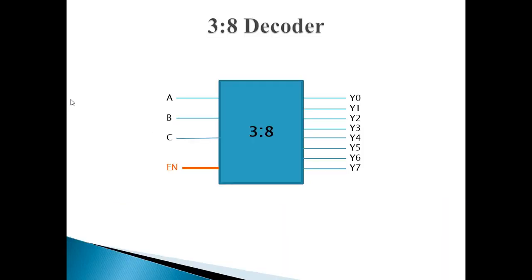This is a 3-to-8 decoder which has 3 input lines and 8 output lines. Along with these 3 input lines it also has one enable line. Normal decoder operation we have already seen in the last video.